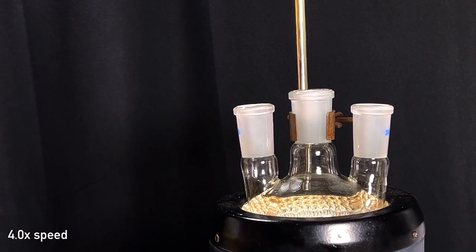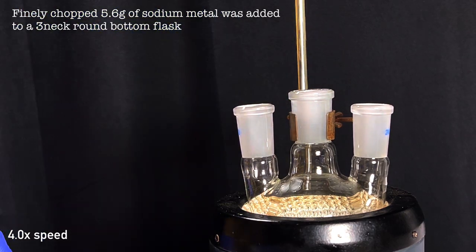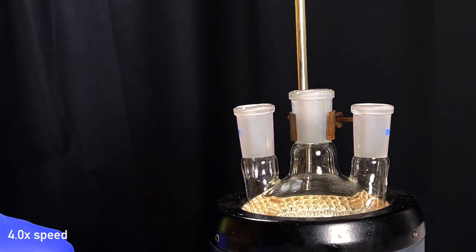Place a 250 ml three-neck round bottom flask in a heating mantle and add 5.4 grams of finely chopped sodium metal to it.